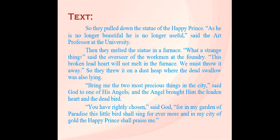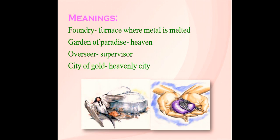'Bring me the two most precious things in the city,' said God to one of his angels, and the angel brought him the leaden heart and the dead bird. 'You have rightly chosen,' said God, 'for in my garden of paradise this little bird shall sing for evermore, and in my city of gold the Happy Prince shall praise me.' God said that the bird would always sing in the garden of his paradise and the Happy Prince would stay in a city of gold and always admire him.